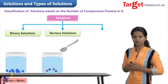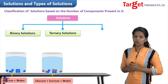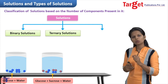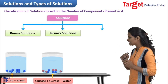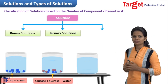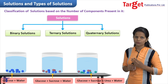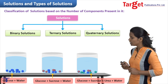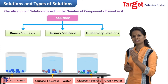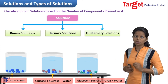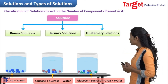The second type is ternary solution, where we add two different solutes in one solvent — for example, glucose as well as sucrose in water. We have two solutes and one solvent, giving three components in total, and hence it is called a ternary solution. The final category is quaternary solution — quaternary means four. Whenever you see four components in a solution, it is called a quaternary solution. For example, glucose, sucrose, and urea added in water gives three solutes and one solvent — four components total.